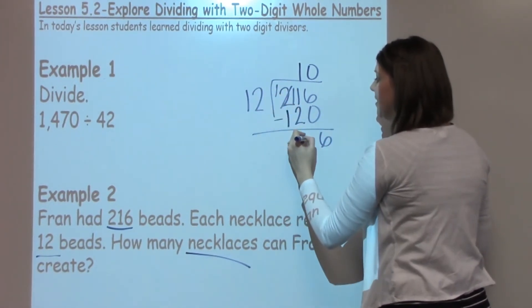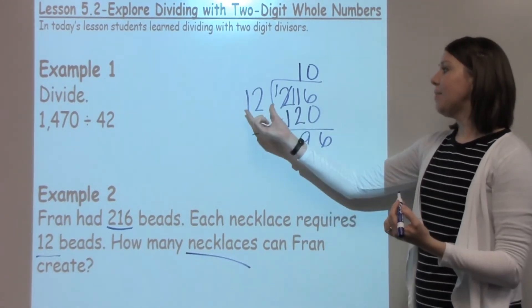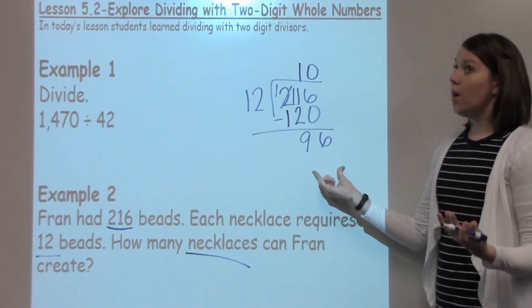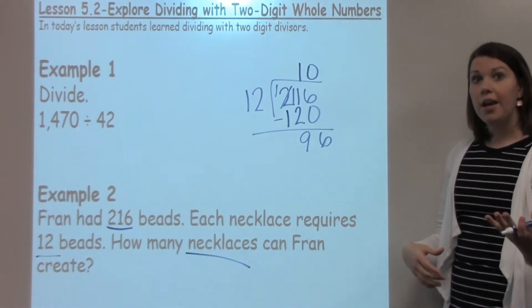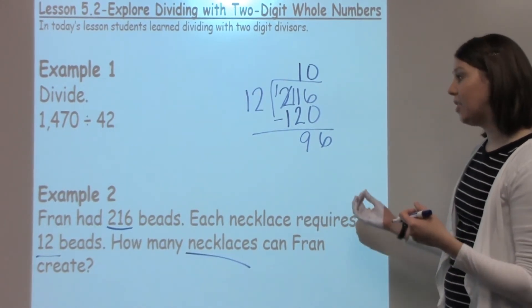What this does is it makes the number quite a bit smaller for students to start using, and they can think, how many 12s are in 96? Well, some students might know there are 3, or they might know there's 5, or whatever fact they happen to know, they can use.